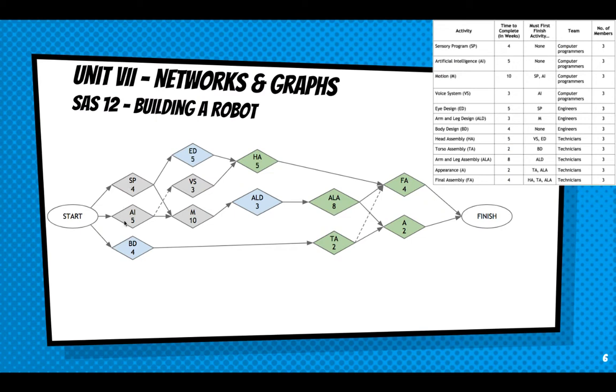But that's all the pathways that originate through sensory program. Let's go through artificial intelligence. So AI is 5. Go to vision, a voice system. That's 8. Another 5 for head assembly. That's 13 plus 4 is only 17. Obviously not a very long, that's not our minimum time of completion. Let's go another way. AI is 5. Motion is 10. That's 15. 3 is 18. 8 is 26. Is that right? 5, 15, 18, 26. Yes. 4 is 30.